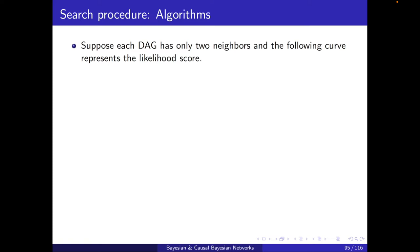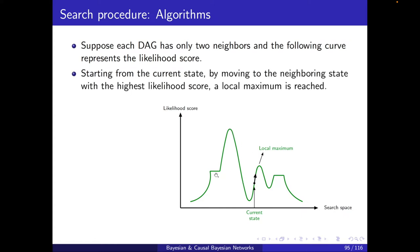Suppose each DAG has only two neighbors, and the following curve represents the likelihood score. This is the likelihood scores. This is the point that I'm interested in, which is the global maximum. These are some local maximum. Now, starting from the current state, imagine I'm here. By moving to the neighboring state with the highest likelihood score, which is the procedure for a local search, I will be moving up. A local maximum will be reached. I will eventually reach here, and then I will check whether if I go further to the right, will it increase my score? No, so I better stay there. Okay, so I'll get stuck here.